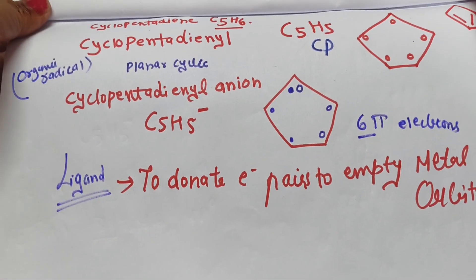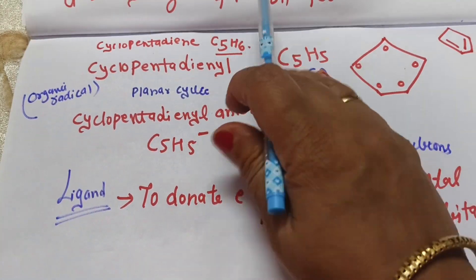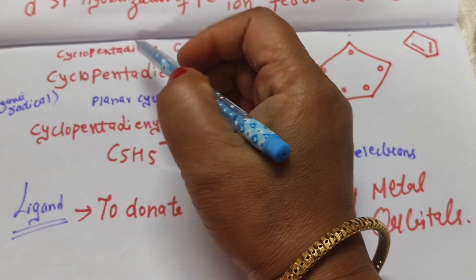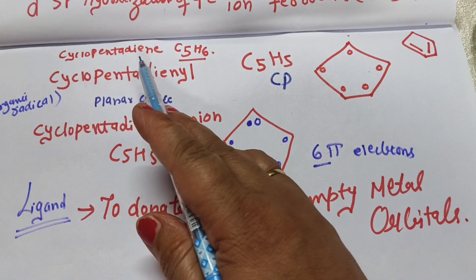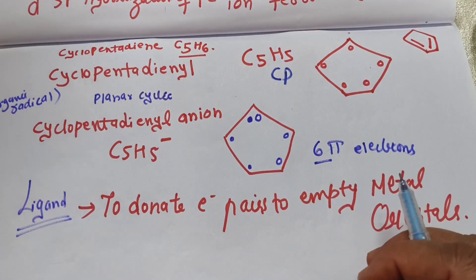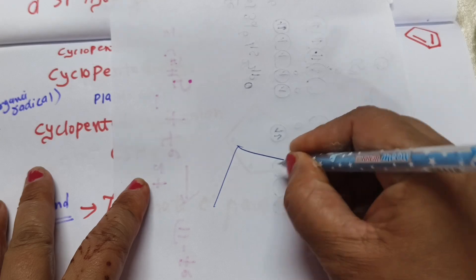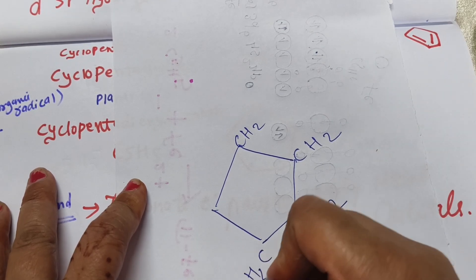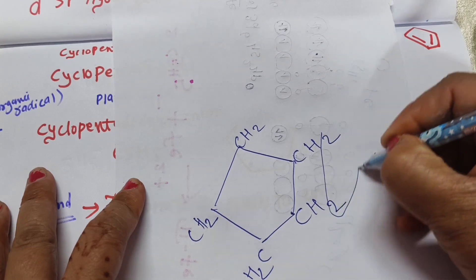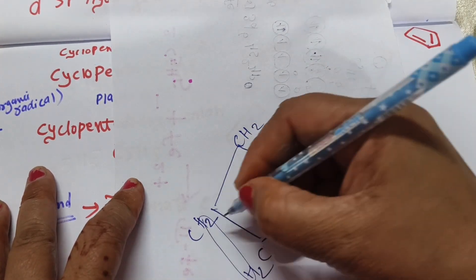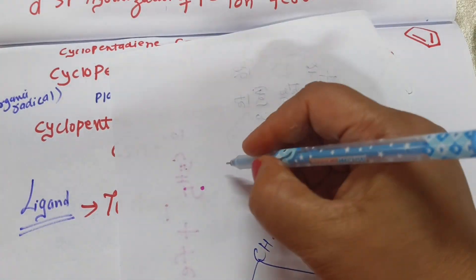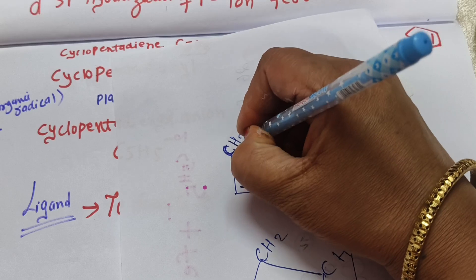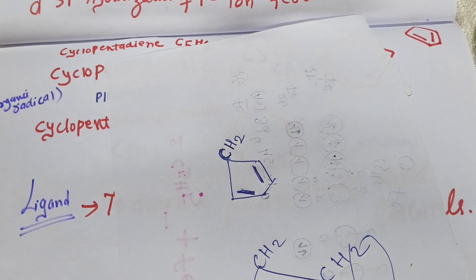Before discussing properties, we should clarify three terms: cyclopentadiene, cyclopentadienyl, and the cyclopentadienyl anion. Cyclopentadiene (C5H6) has a 5-membered ring with two double bonds and one CH2 group. Its structure contains CH2 and two double bonds — it is a cyclic diene or alkene.